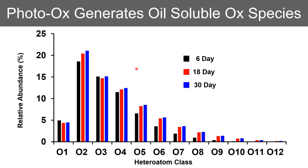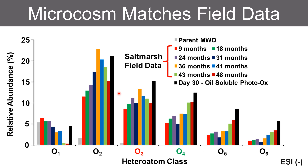To reveal that, we performed photo-oxidation-only microcosms — characterization of the oil-soluble species remaining after photo-irradiation. These show a similar distribution to field samples from O1 all the way out to 11 oxygens per molecule. The most notable thing is how quickly it occurs: after six days you are already at the equilibrium of the later 18-day and 30-day distributions. When we compare what was detected in the microcosm experiments to a four-year time series of field samples in a collaboration with LSU, we see a very nice correlation, further supporting that photo-oxidation is responsible.